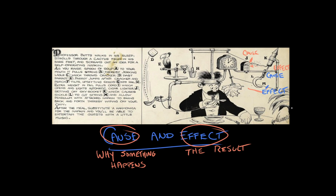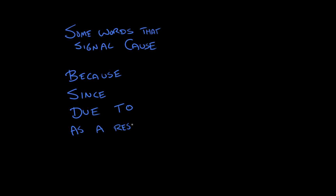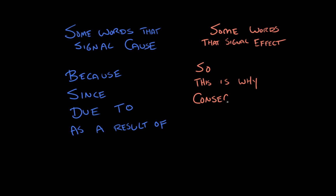We can see this very clearly in writing when an author gives us clue words about how information is connected — about how or why things happen in a text. So with that in mind, here are some words that signal cause: because, since, due to, as a result of. Whereas here are some words that signal effect: so, this is why, consequently, therefore, and led to. Certainly, these aren't the only words or phrases that signal cause or effect, but they are useful ones to look for.